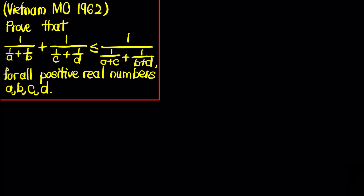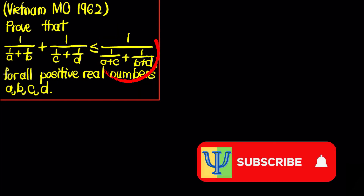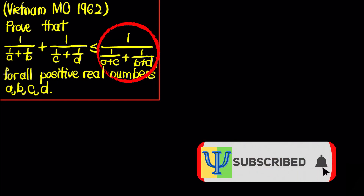Let's solve a problem from the Vietnam Mathematical Olympiad 1962, which is the first ever Vietnam Mathematical Olympiad. We have to prove that the following inequality holds for all positive real numbers a, b, c, and d: 1/(1/a + 1/b) + 1/(1/c + 1/d) is less than or equal to 1/(1/(a+c) + 1/(b+d)).